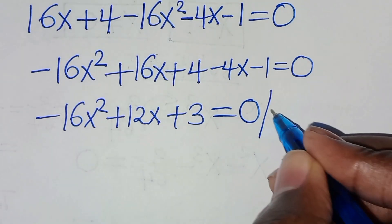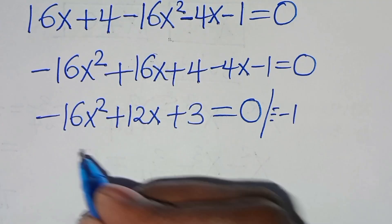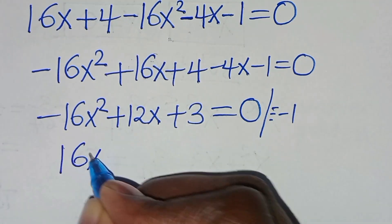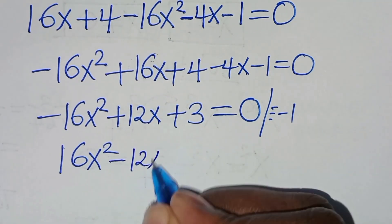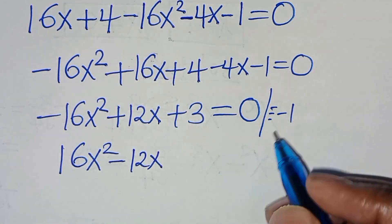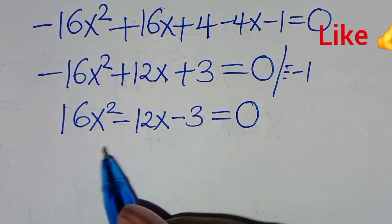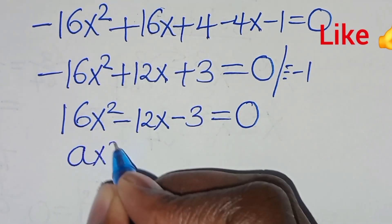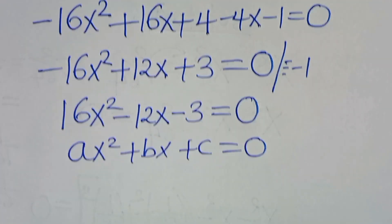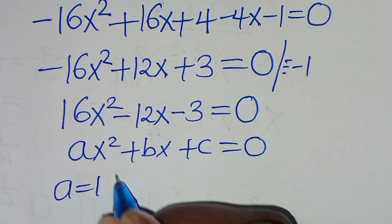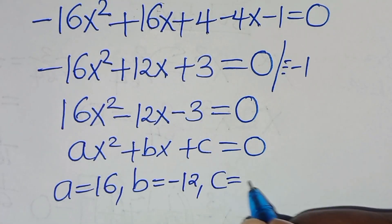Now let's divide both sides by minus 1, so that we have 16x squared minus 12x minus 3, this is equal to 0. This is a quadratic equation of the form ax squared plus bx plus c equals 0. From this quadratic equation, a is equal to 16, b is equal to minus 12, and c is equal to minus 3.